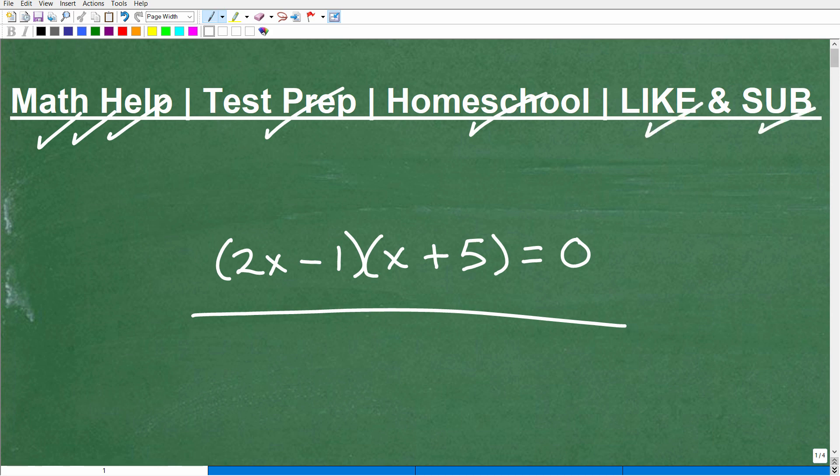Okay, so let's get to this. We have 2x minus 1 times x plus 5 is equal to 0. So again, in algebra, a big part of solving any equation or dealing with any kind of problem is by, you know, first of all, just recognizing what are we dealing with. Okay, so what type of equation is this?